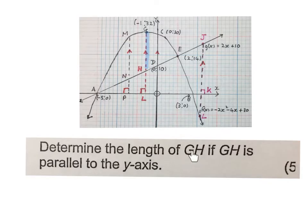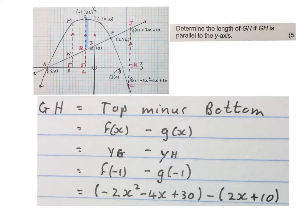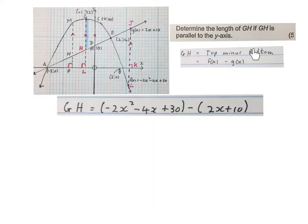First, they ask us to determine the length of GH if GH is parallel to the y-axis, that blue line from g to h. I advise you to write down GH equals top minus bottom. You can start with f(x) minus g(x), or y at g minus y at h, or f(-1) minus g(-1), but this is where I'd like us to start. We write the expression for the parabola minus the expression of the straight line. In this sketch, the top is the parabola and the bottom is the straight line.